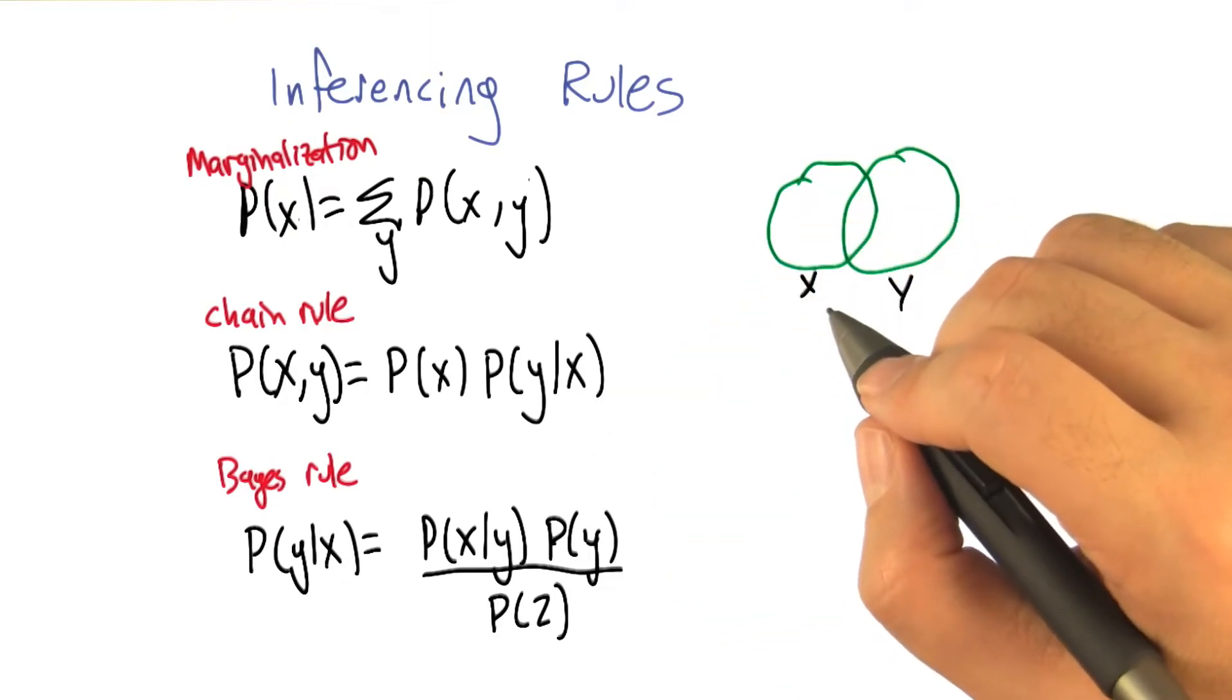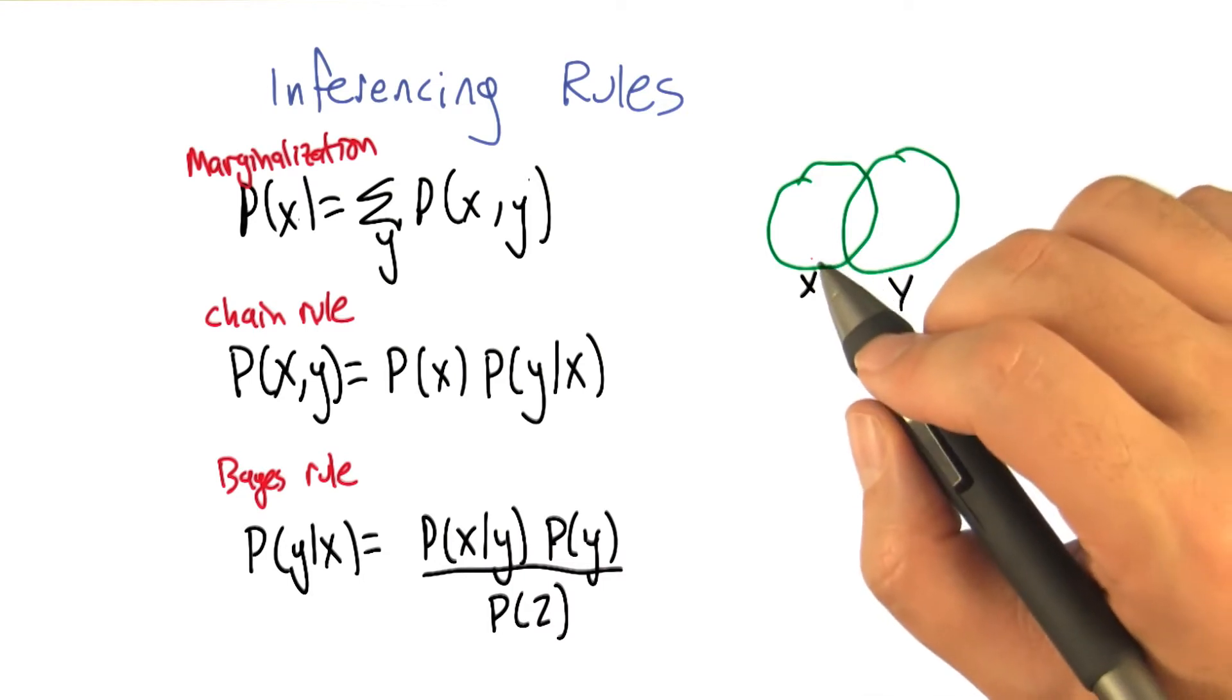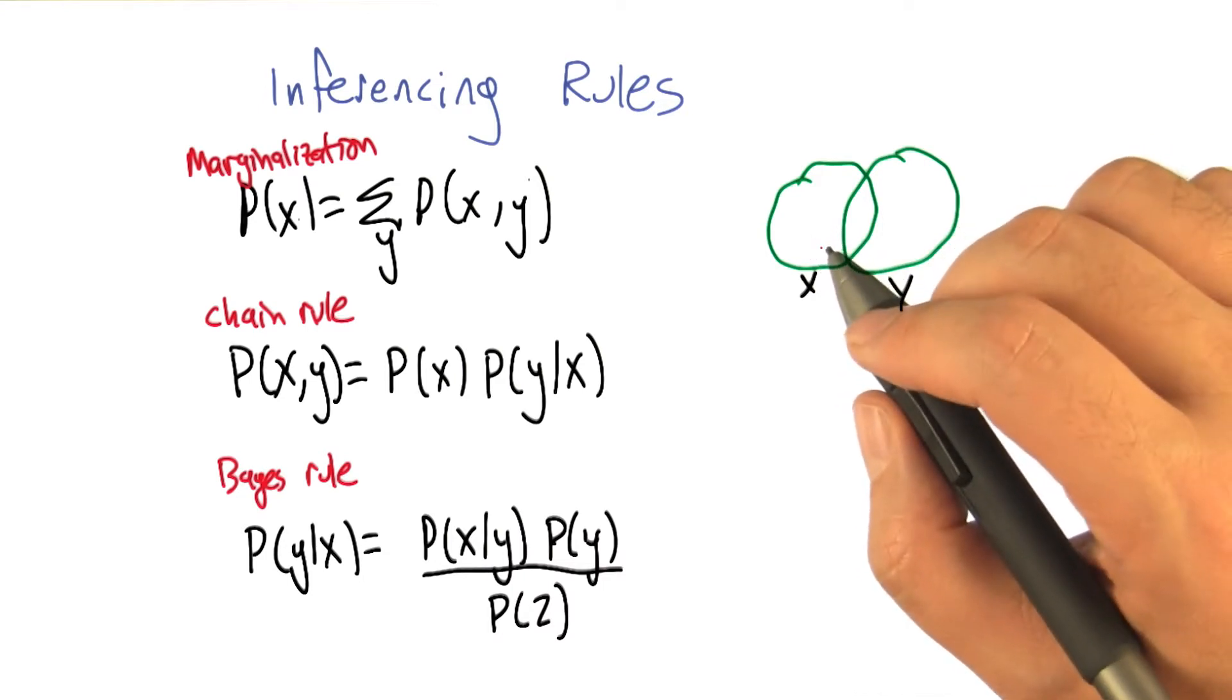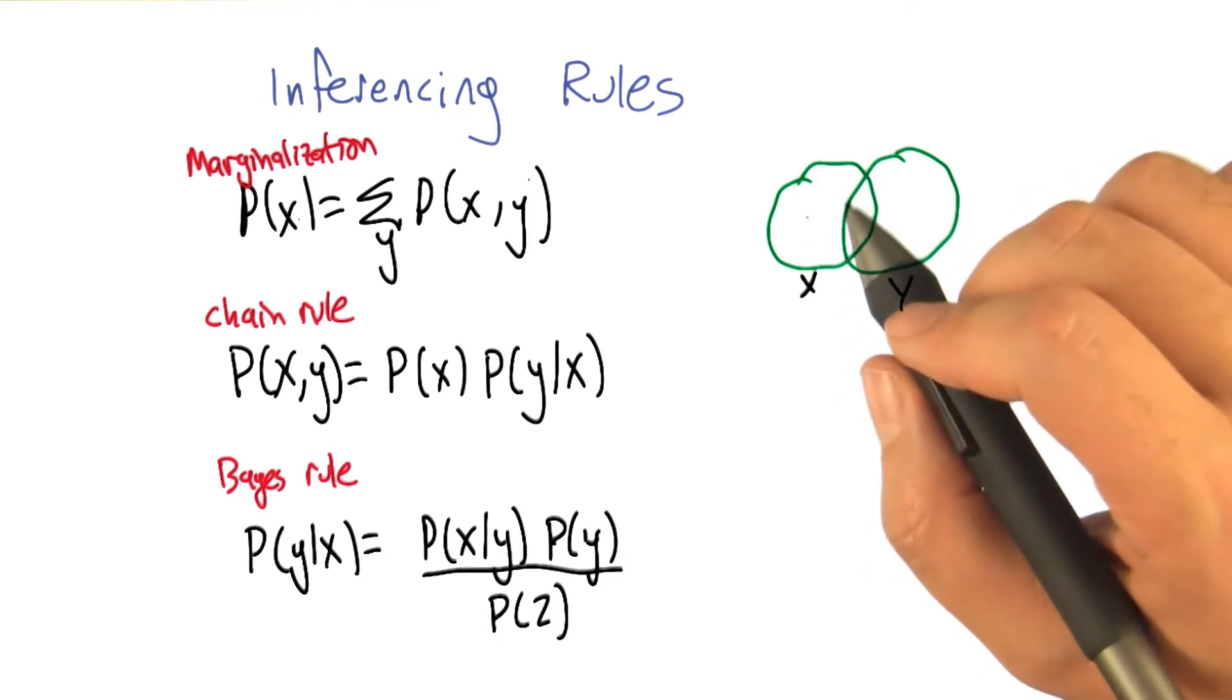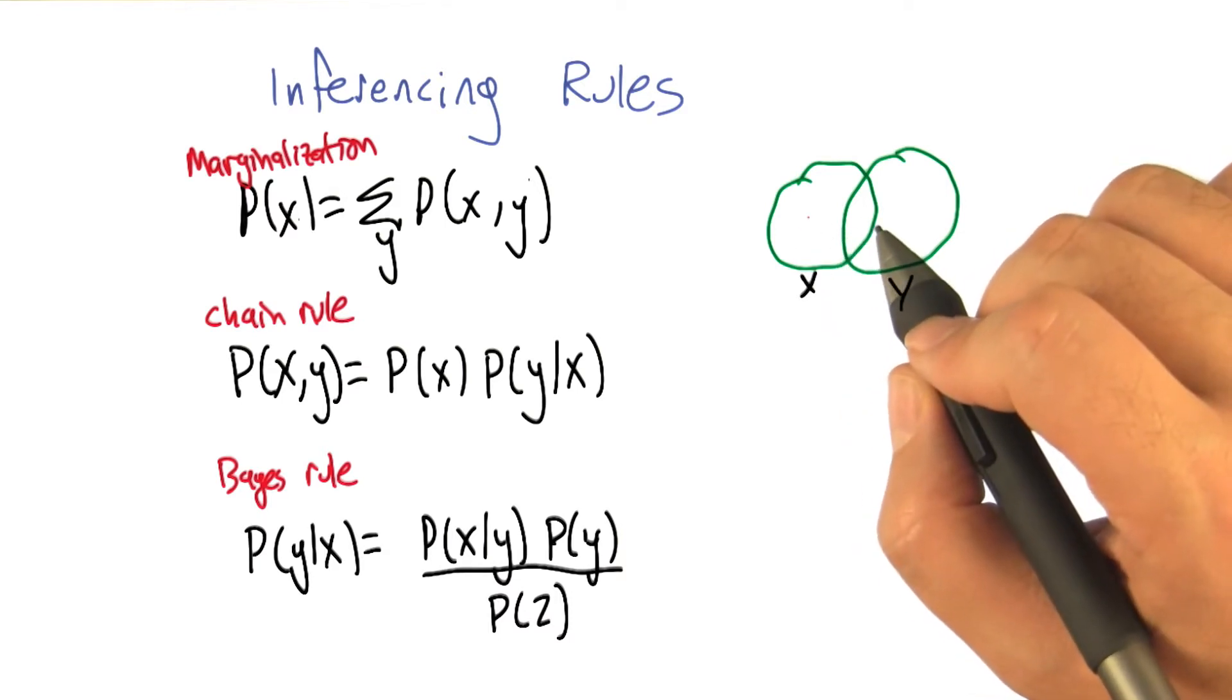So, let's actually do some inferencing just to get a feel for it. For certain kinds of networks, we actually can do things exactly, and we're going to look at one of those examples in just a moment. But it turns out it's helpful to remind ourselves of some rules of probability and inference that will help us do that.